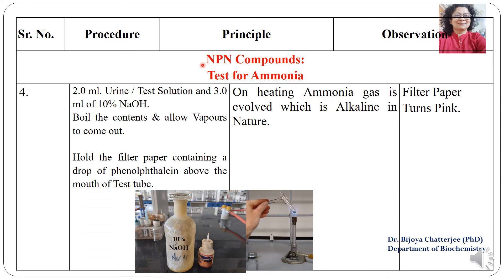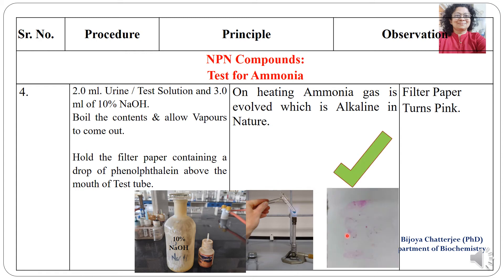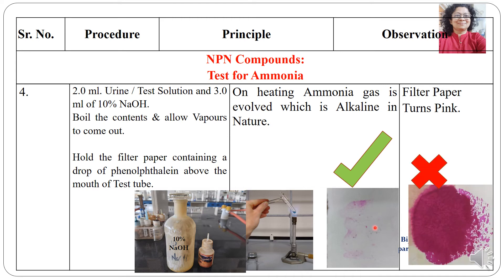One more NPN compound is ammonia. Although ammonia is an inorganic compound, it is a non-protein nitrogen compound. To detect ammonia in normal urine, take 2 ml of urine, add 3 ml of 10% NaOH and boil the contents, allowing vapors to come out. While boiling, hold a piece of filter paper soaked in phenolphthalein above the tube. The ammonia gas reacts with phenolphthalein to produce pink droplets on the filter paper, indicating the presence of ammonia gas.